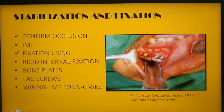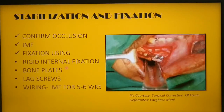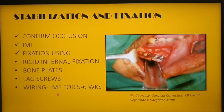Once the mandible is repositioned, occlusion is checked and confirmed. The maxillomandibular complex is placed in intermaxillary fixation (IMF). The bony segments are then fixed using rigid internal fixation — bone plates for advancements or lag screws or wiring. If bone wiring is used, IMF must be maintained for another 5 to 6 weeks.